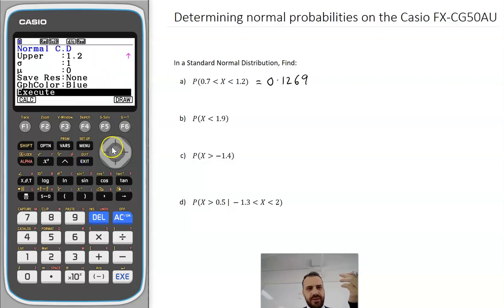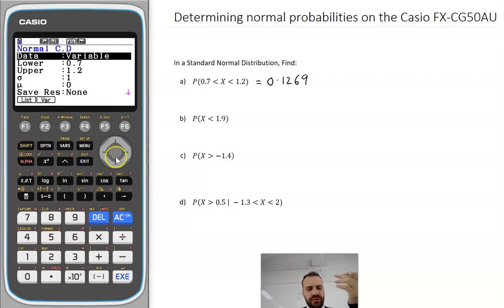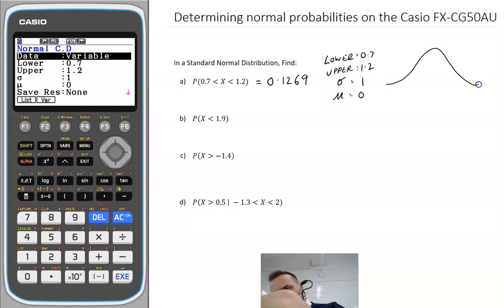So there's my answer there. I really want to show the examiners what I'm doing. I might just go back to the previous screen, and if I was doing an exam, I would write lower, upper, standard deviation, and mean and put in my four values there so the examiners can see what I'm doing. I'll just draw in a quick little sketch. That's 0.7 there, that's 1.2 there, and there's my area there. So there's my full solution to a question like that.